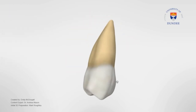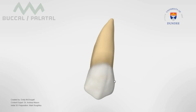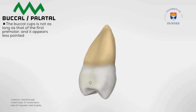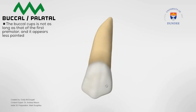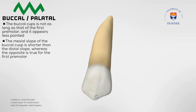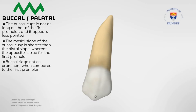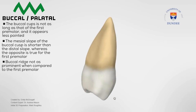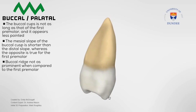To begin with, looking at the tooth from the buccal and the palatal view, the buccal cusp is not as long as that of the first premolar and it appears less pointed. The mesial slope of the buccal cusp is shorter than the distal slope, whereas the opposite is true for the first premolar. The buccal ridge is not as prominent when compared to the first premolar.